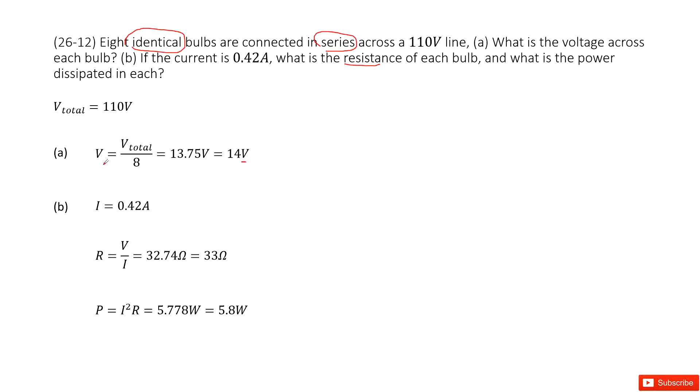the current is given, voltage is given for each lightbulb. We can use Ohm's law, right? Just as the voltage divided by the current, we get it as 33 ohms.